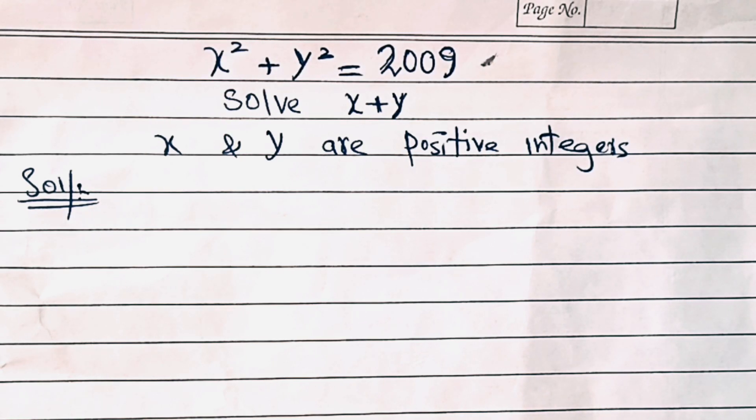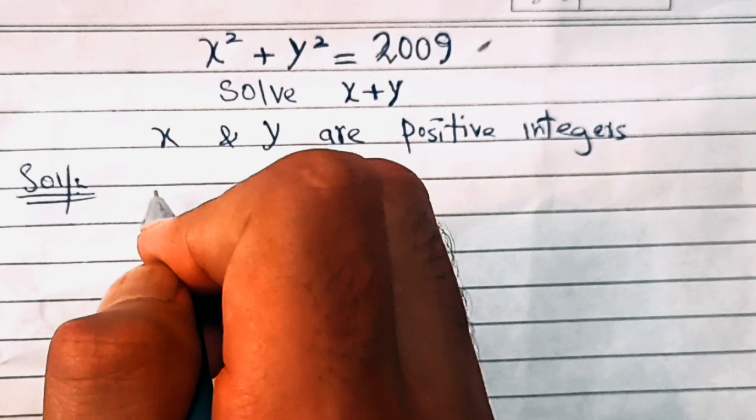Hello everyone, we have x square plus y square equal to 2009. We have to solve for x plus y, and x and y are positive integers. So let's start. First of all, we know the factorization of this number.